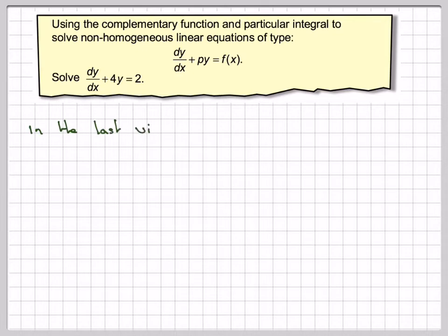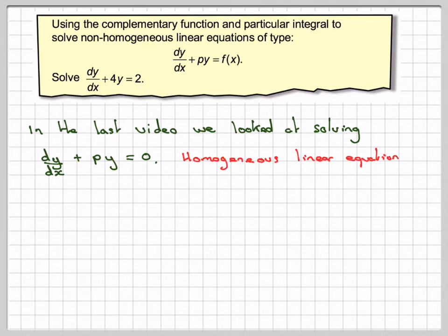Let's have a look at this. In the last video, and you need to look at the last video before looking at this one, we were solving equations of the type dy by dx plus py is equal to 0, and we called these homogeneous linear equations.